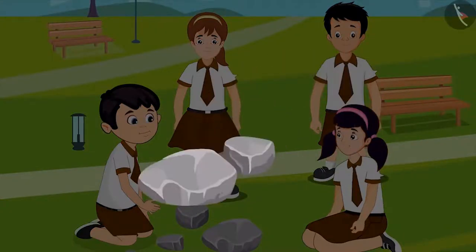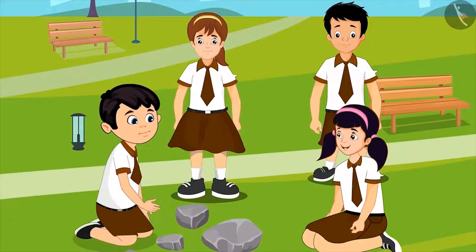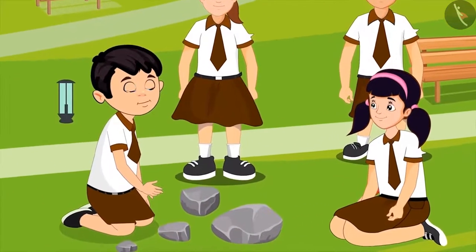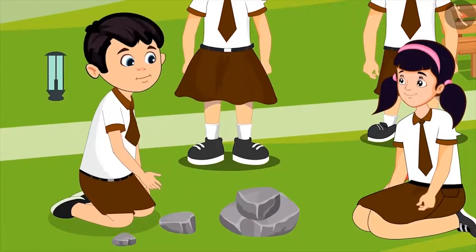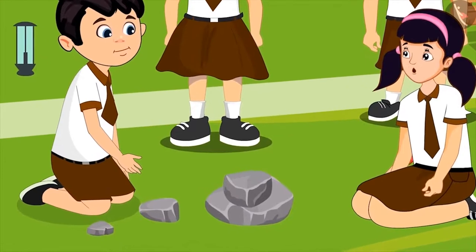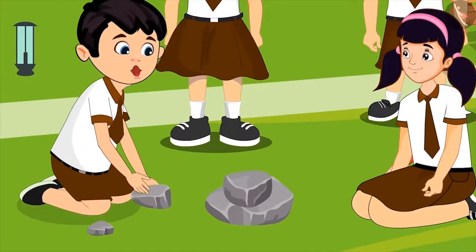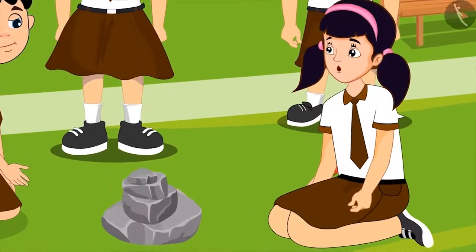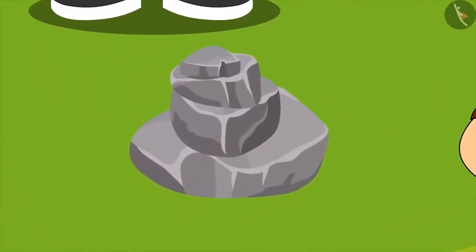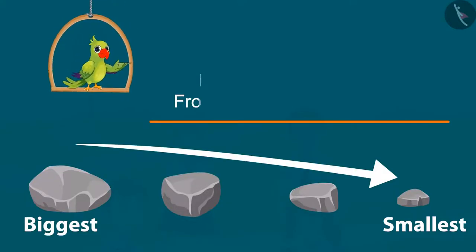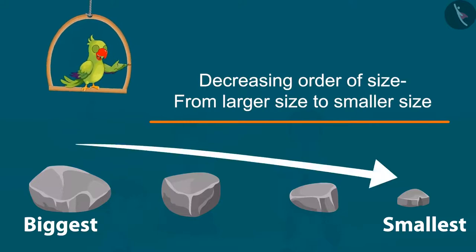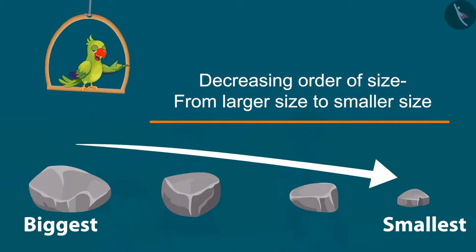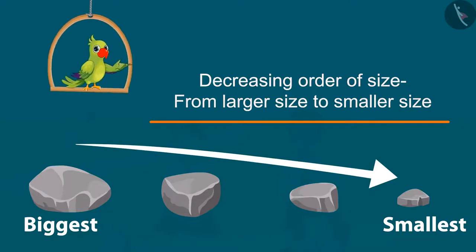Aarti explains: "If we place a large-sized stone on a small-sized stone, it will fall down because its balance will be disturbed — just like this. Therefore, we place a big stone at the bottom and then smaller ones on top, so that the balance of the stones is maintained." Chotu then places the next stone, and finally the last stone. Their stone pile is now ready, and they proceed to place all seven stones in decreasing order of size, from large to small.